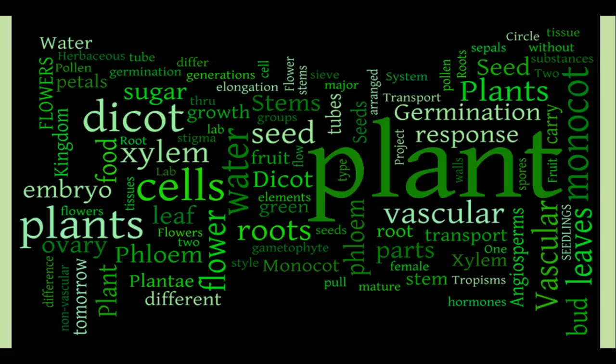Now we're going to talk about the plant kingdom. The plant kingdom is defined as having members who are multicellular autotrophs with chloroplasts and cell walls made of cellulose. We're going to talk about different kinds of plants and the types of cells they're made of, and the tissues and organs.